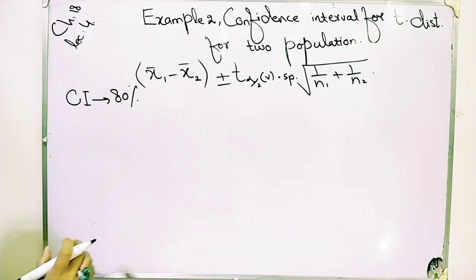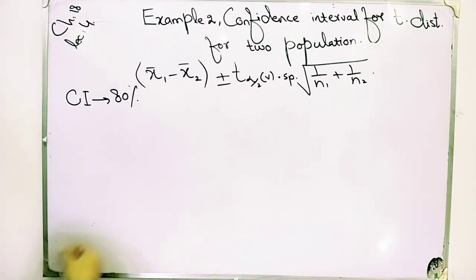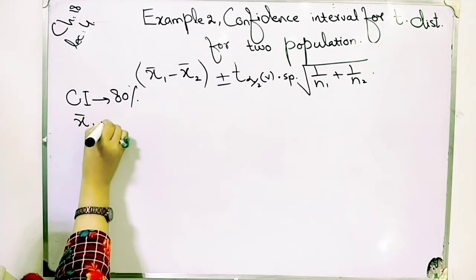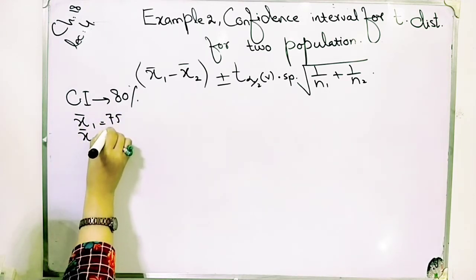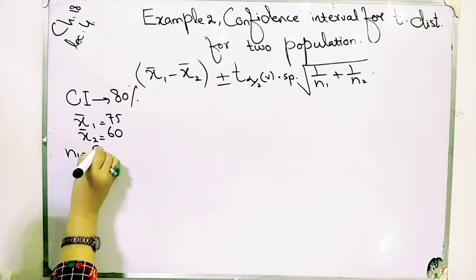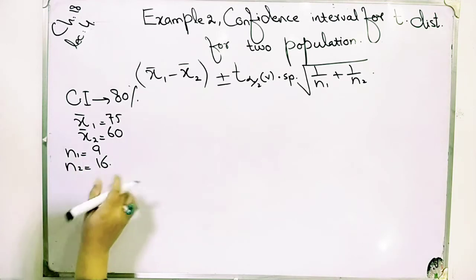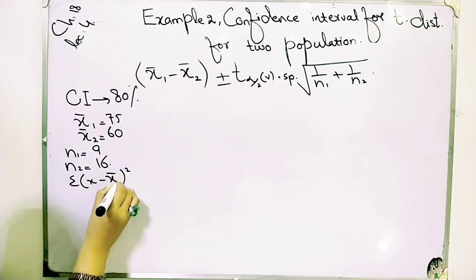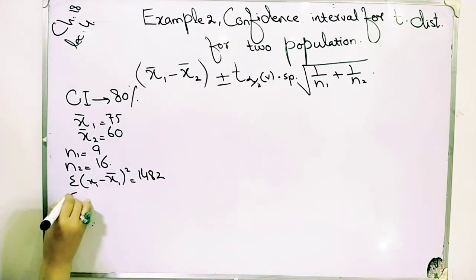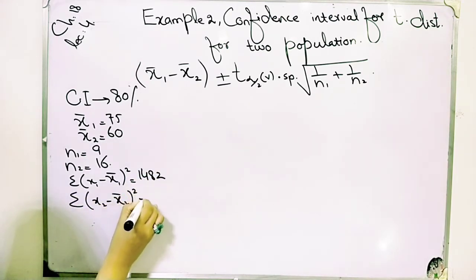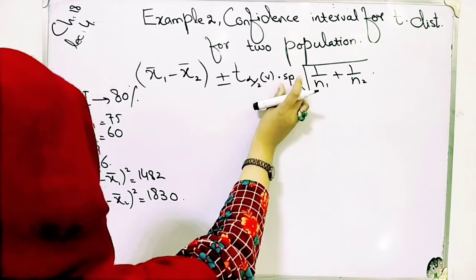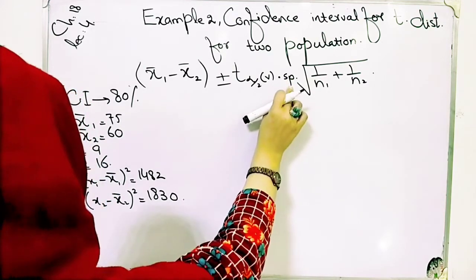Now, first of all we need x̄₁ — we need the mean, which is given. x̄₁ is given as 75, x̄₂ is given as 60, n₁ is given as 9, and n₂ is given as 16. So we have two values given. We also have x̄₁ minus x̄₂ given, and we have to find the common variance — the pooled estimator of the common variance.